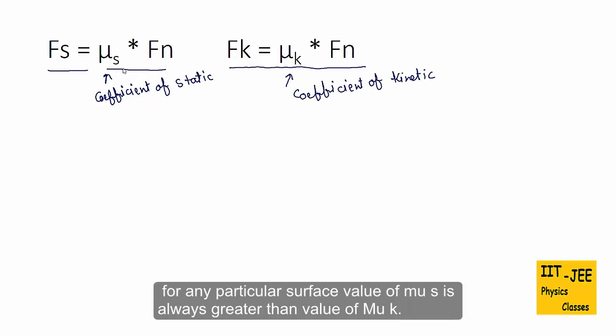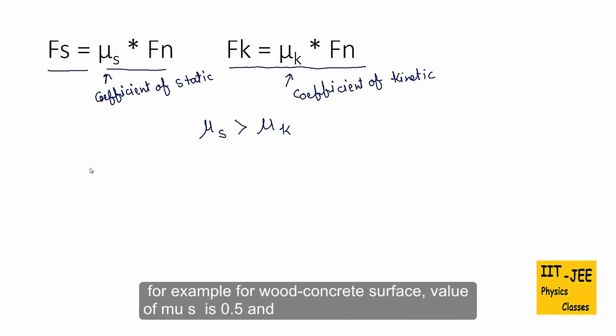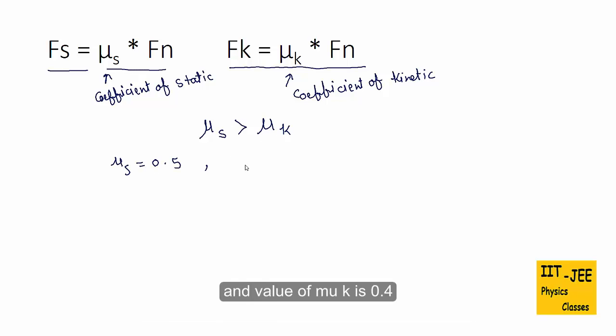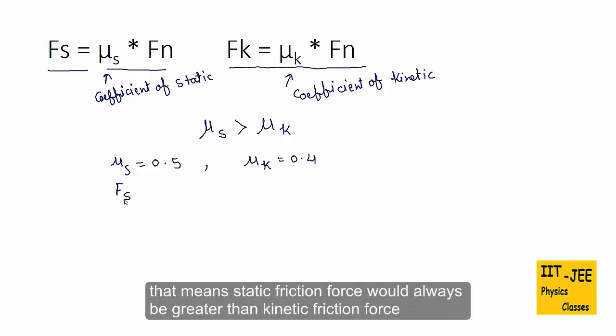For any particular surface value of μs is always greater than value of μk. For example for wood concrete surface value of μs is 0.5 and value of μk is 0.4. That means static friction force would always be greater than kinetic friction force.